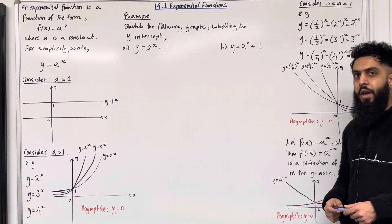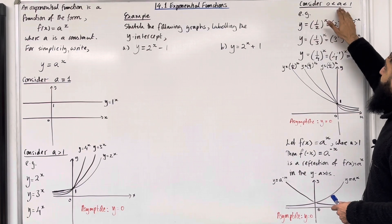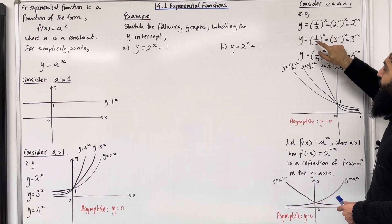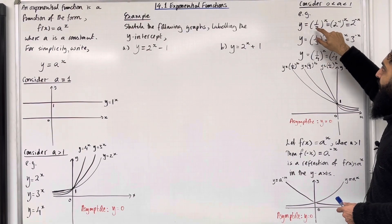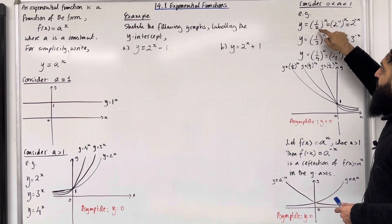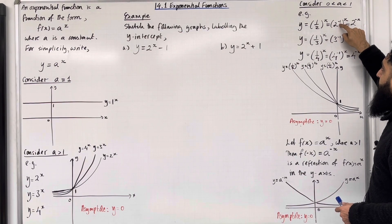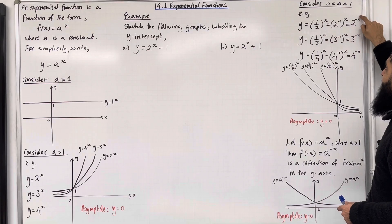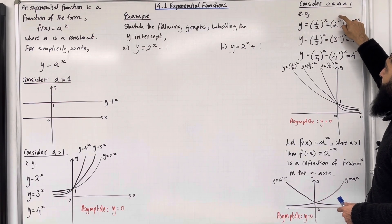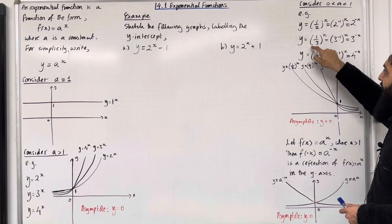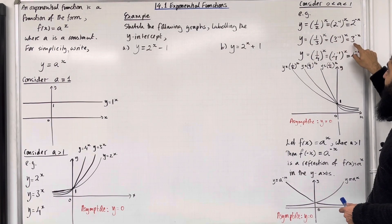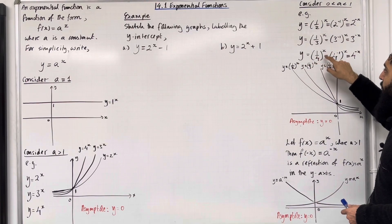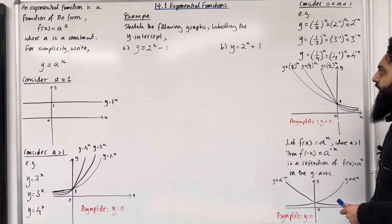Moving on to the third scenario: consider 0 < a < 1. For example, a = 1/2, a = 1/3, a = 1/4. Using laws of indices, 1/2 is the same as 2^(−1), so y = (1/2)^x simplifies to y = 2^(−x). Similarly, y = (1/3)^x can be rewritten as 3^(−x), and y = (1/4)^x can be rewritten as 4^(−x).